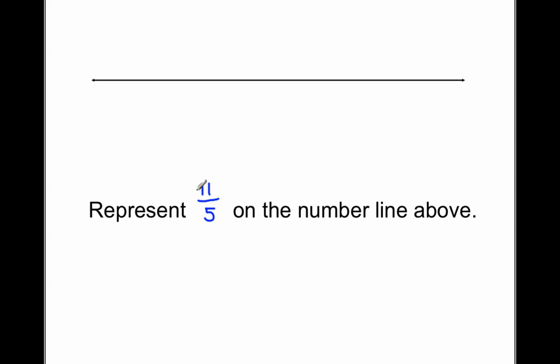Alright, so if we look at this fraction right here, it says represent 11 fifths on the number line above. The denominator tells us how many pieces it will take to make a whole, therefore it takes five pieces because the denominator is five. So every fifth tick mark will be one whole then. So let me start at zero, and let me start counting.